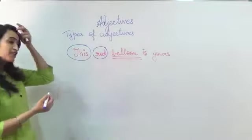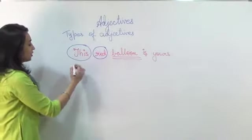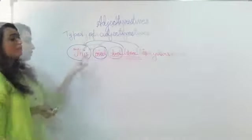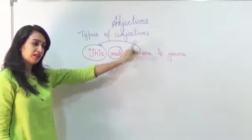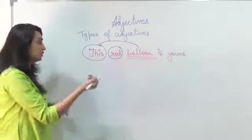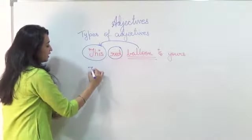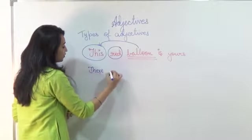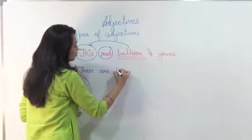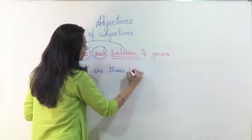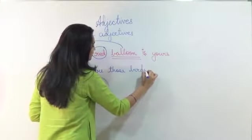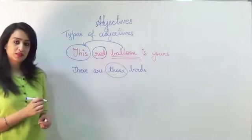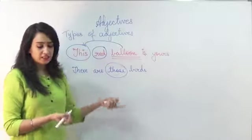So there are two adjectives. Now how this is different? This is different because here I have a noun and then I am describing the noun by giving the place or the distance. I can also say there are those words. Again I am describing the words, so it is an adjective.